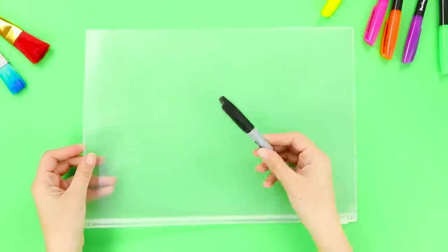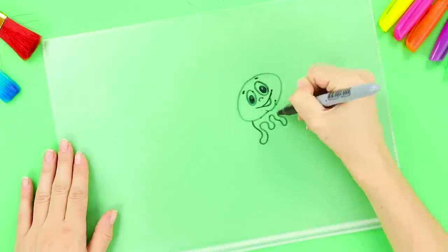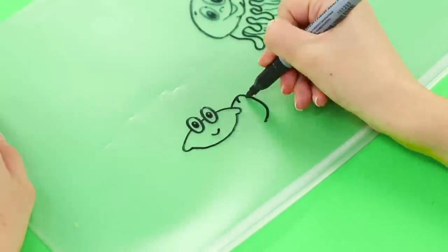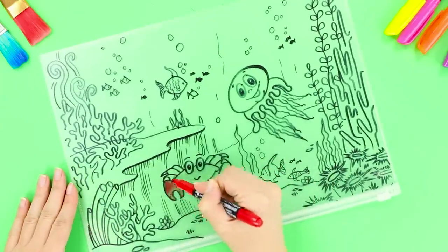First up, take a ziplock folder. Make a drawing with a permanent marker on one side. An octopus, a crab, corals, seaweed... Who else lives in the sea? Color the seabed with markers.